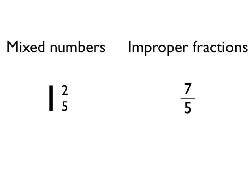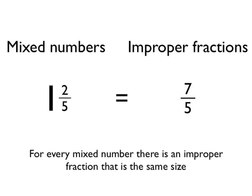There's actually a special relationship between mixed numbers and improper fractions. What you can find is that certain mixed numbers and improper fractions can be equal to each other — they actually describe the same size number.